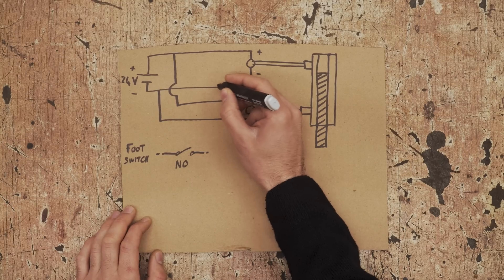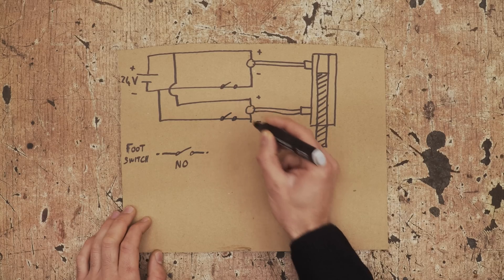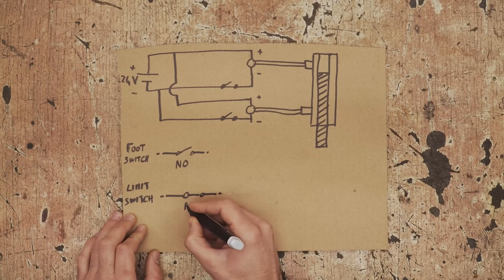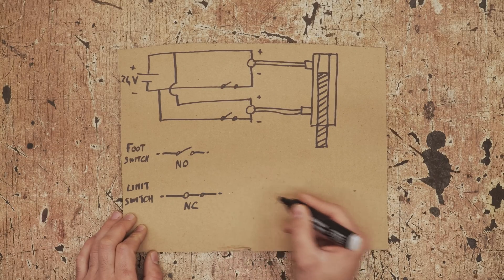So if I push one with my feet, it closes the circuit, activating one of the valves and moving the piston. Now, the limit switch, on the other hand, is normally closed. So as long as I don't press it, the circuit is always closed.